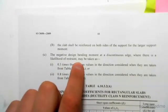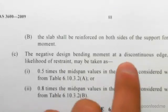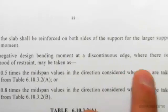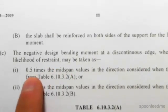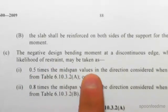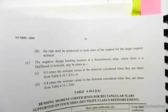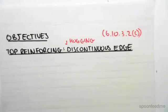The negative design bending moment at a discontinuous edge where there is a likelihood of restraint may be taken as 0.5 times the mid span values. So we saw in the previous video that all we need to do is just multiply the area we found for the bottom reinforcing sagging.